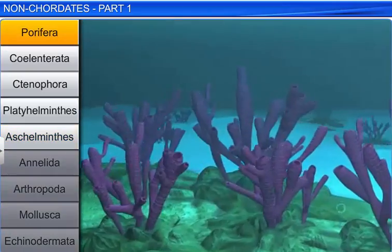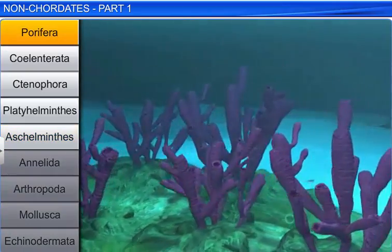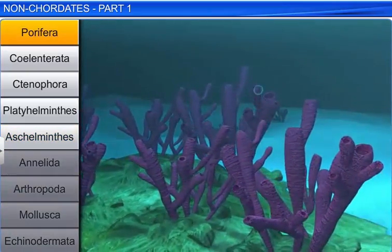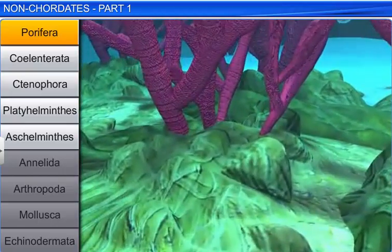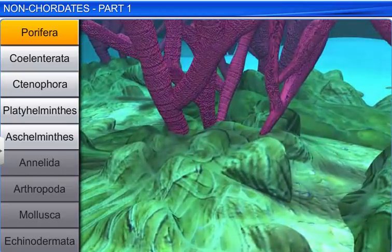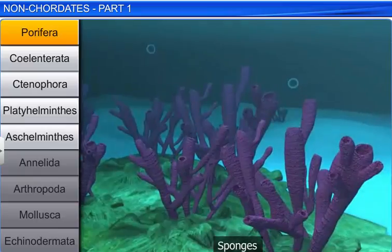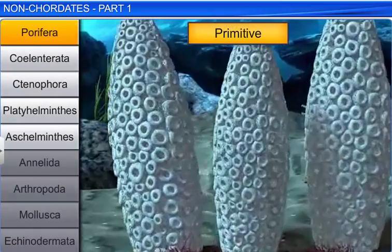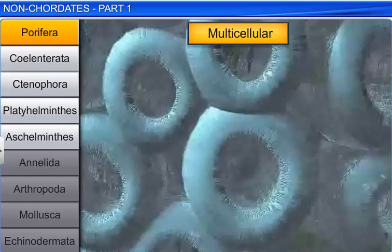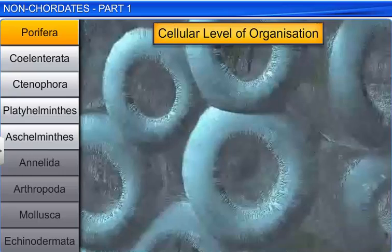The first phylum under non-chordates is Porifera. The members of this phylum are known as sponges. These are primitive, multicellular, asymmetrical, marine animals with a cellular level of organization.